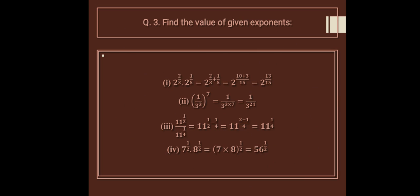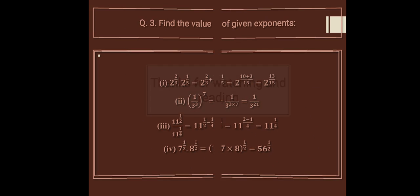7 raised to the power half multiplied by 8 raised to the power half — both bases are different but the power is the same, so we multiply the bases keeping the power: 7 into 8 is 56, giving 56 raised to the power 1 upon 2. Thanks for watching this channel — if you liked it, like, subscribe, and share. Thank you very much.